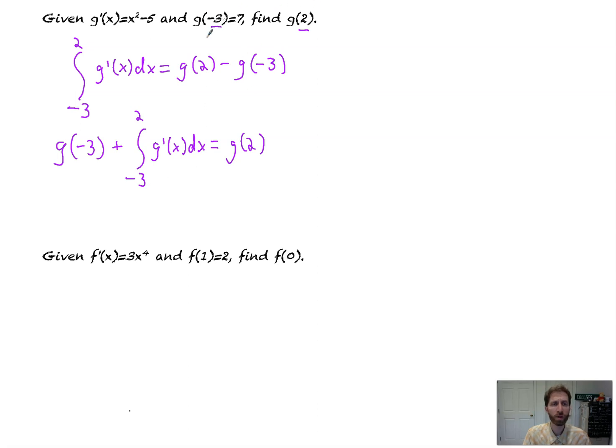Well, g of negative 3 is given as 7. The integral we're going to have to do out step by step. That's going to be plus, I'm going to take this and do it off to the side. So the integral from negative 3 to 2, a little bit of side work, of x squared minus 5 is not so bad. We'll handle it.